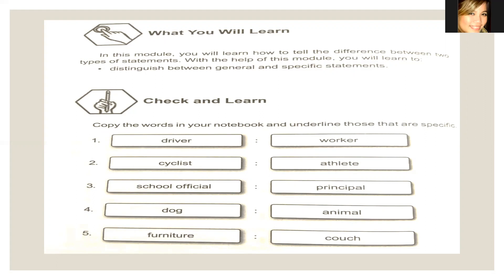Number one — we have the words driver and worker. If you look at it, driver is a worker. So meaning, when we say driver, it is specific — it points out the general word worker. Because when we say worker, there are many kinds of workers.